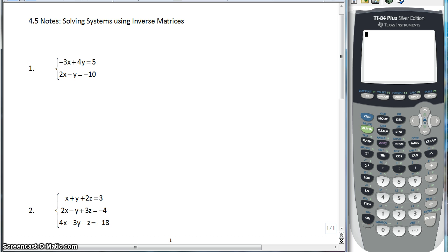So you look at your system, and you want to make sure they are in AX plus BY equals C form, which they are, and your calculator is going to do all the work for you. So you do have to show a setup, so you need three matrices.